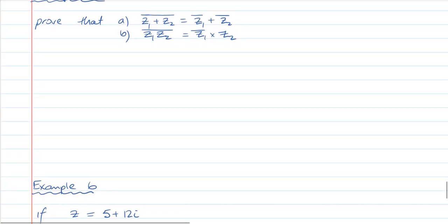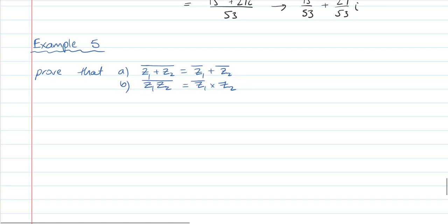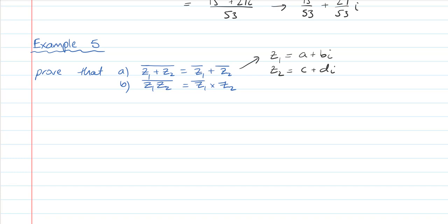Now in Example 5 we have two things to prove — they're not too tricky but do take a bit of time. We'll do part a first: prove that the conjugate of z1 plus z2 is equal to the conjugate of z1 plus the conjugate of z2. The best way to do this is to define z1 as a plus bi and z2 as c plus di. You can define them as whatever you want.